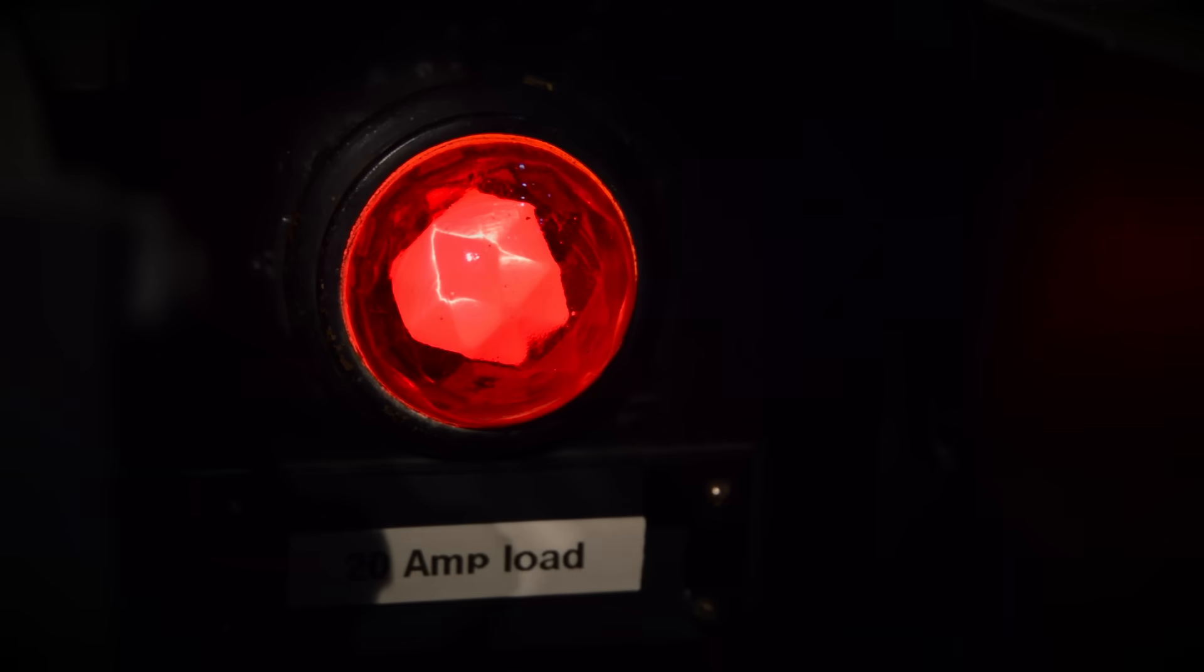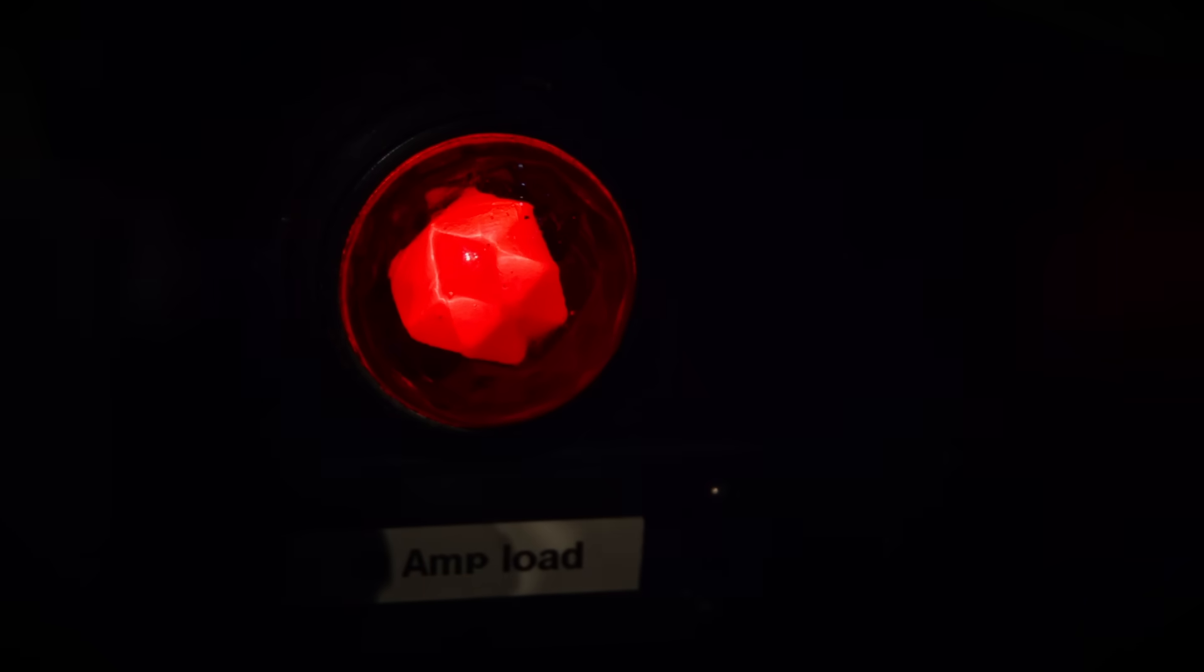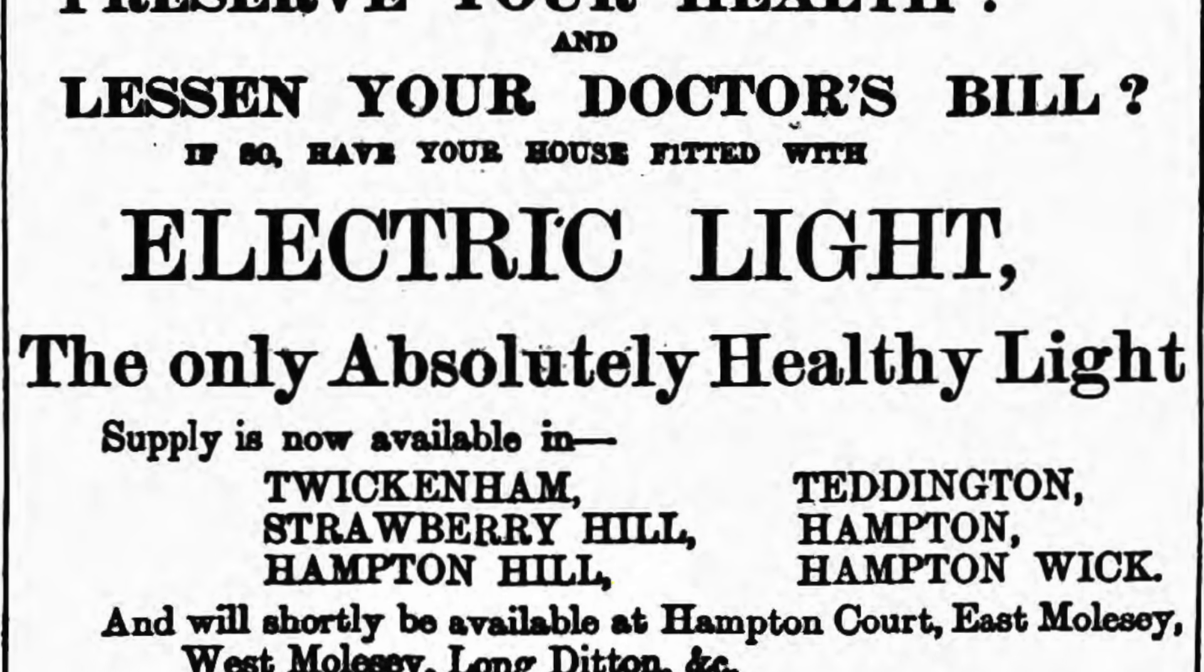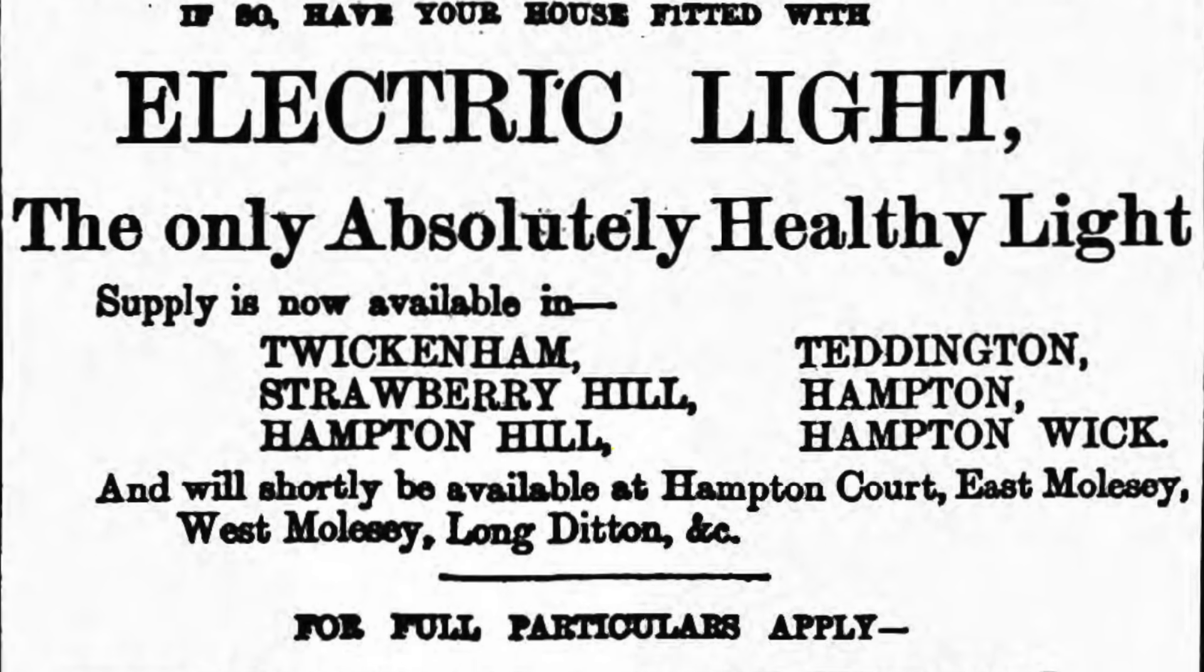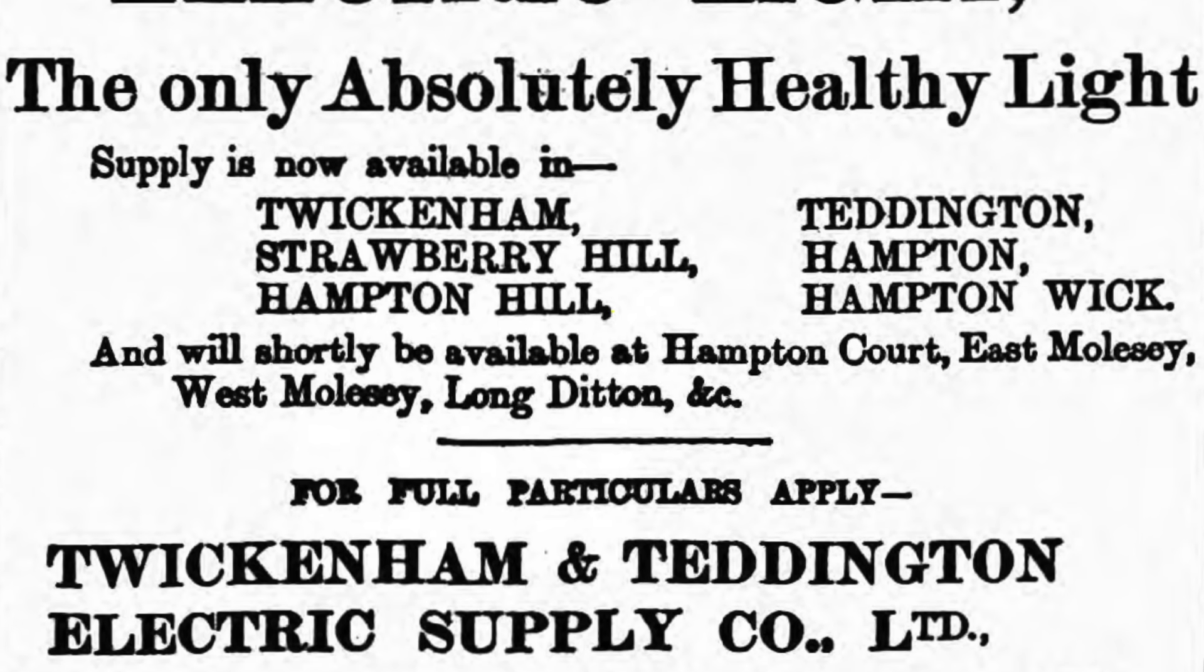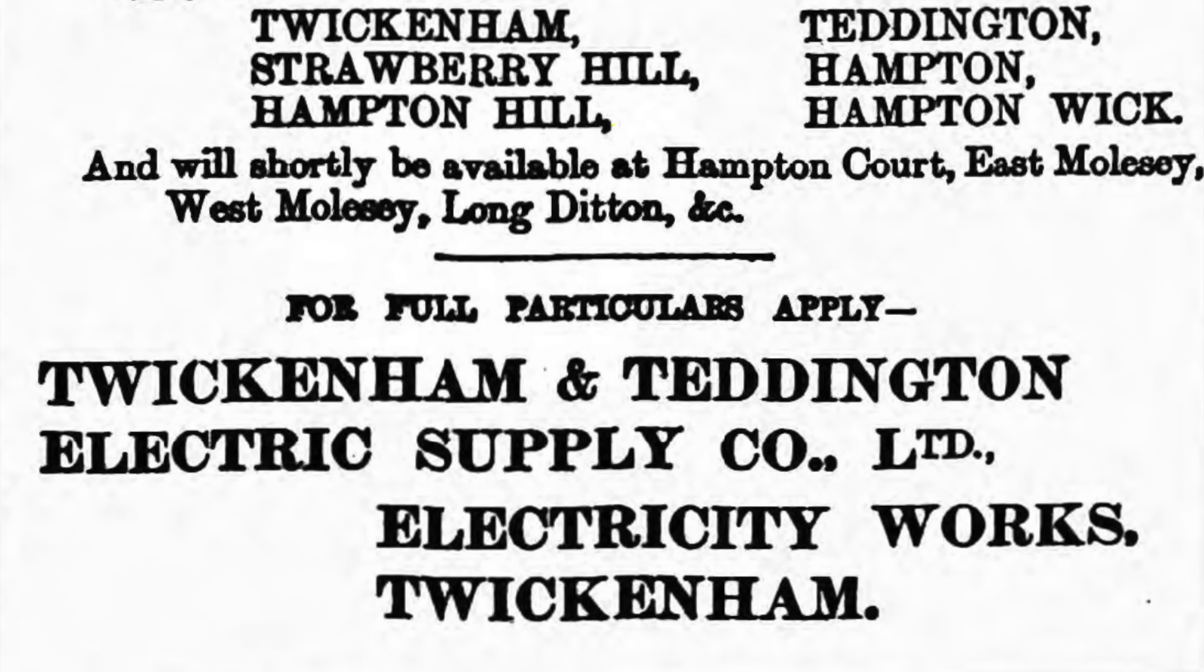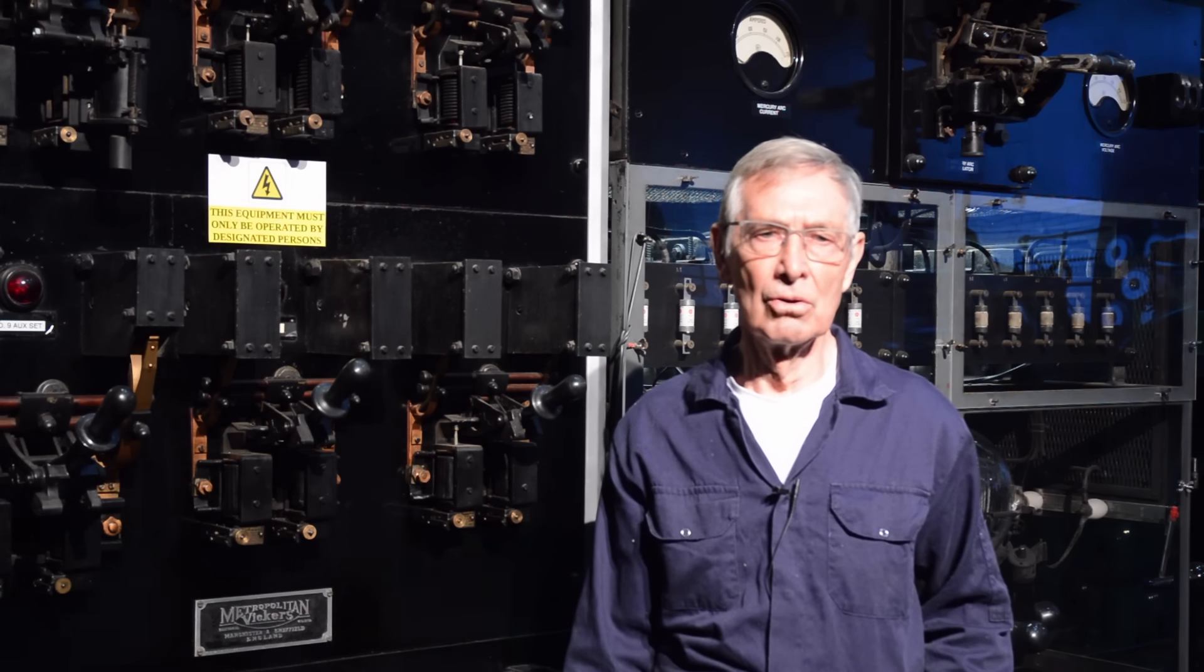In the early part of the 20th century, electricity supplies were not generally available. What there was was usually generated by small companies, mostly for their own need, and then distributed in the immediate local area. As a result, there was no standardization of the type of electricity or the voltage. Companies generally chose to generate whatever was convenient for their own needs.